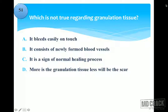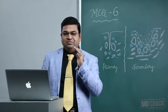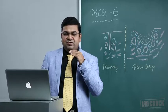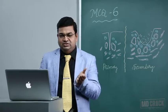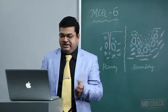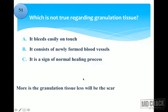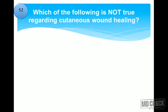Granulation tissue bleeds easily on touch because it consists of friable endothelial cells in newly formed blood vessels — they are very fragile. So it bleeds on touch classically. It consists of newly formed blood vessels — that is the definition. It is a sign of normal wound healing. So more granulation tissue means more scar, making option D (less scar) the correct answer.